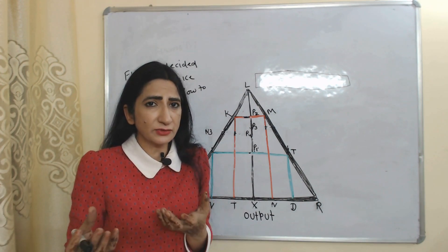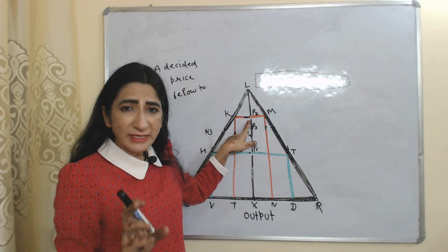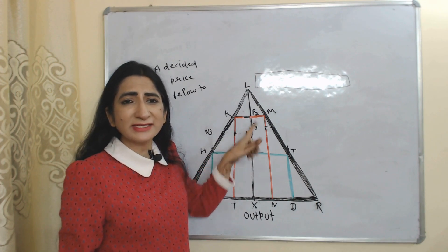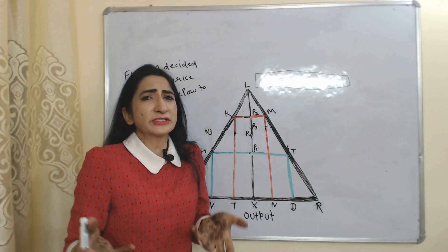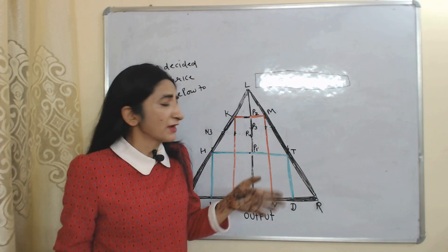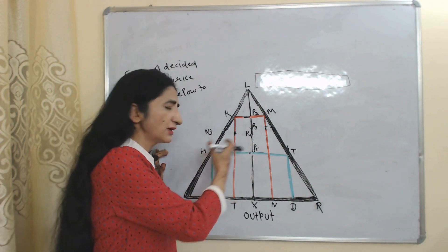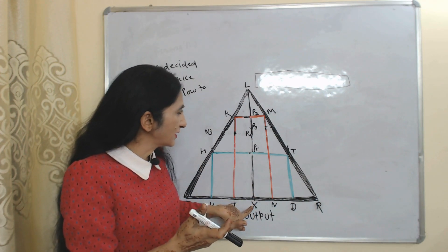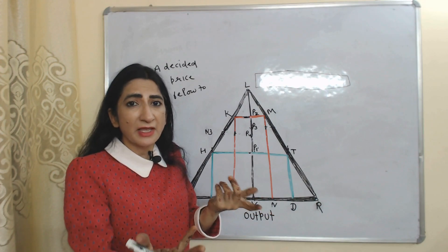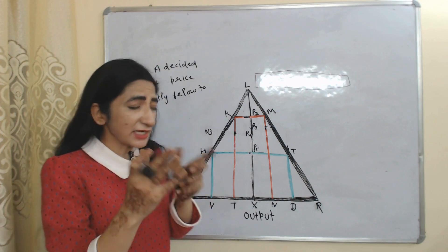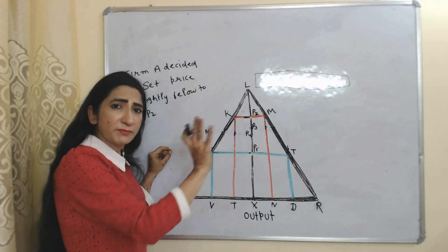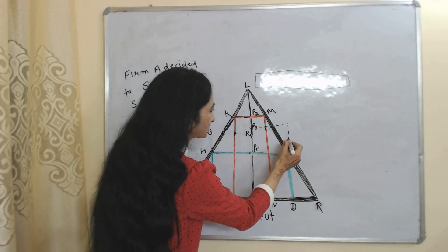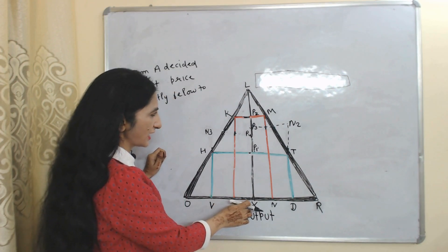Now suppose firm A decided to set its product price slightly below xp2. Why did firm A suddenly decide to reduce its price? Obviously, in order to earn more profit. When the price of A is less than the price of B, customers of B will come to A, and eventually profit of A will increase. So firm A decided to reduce its price, assuming B will not change its price — prices of B will remain constant.